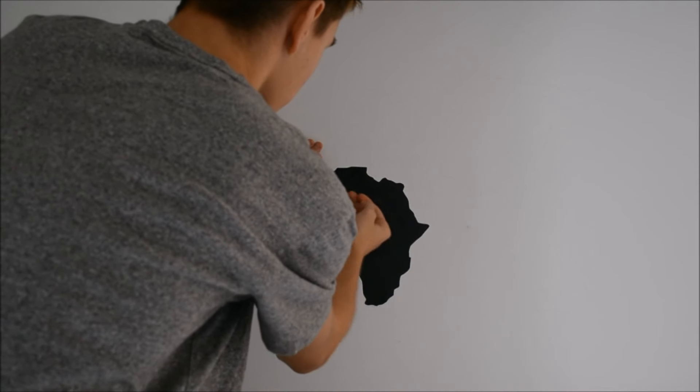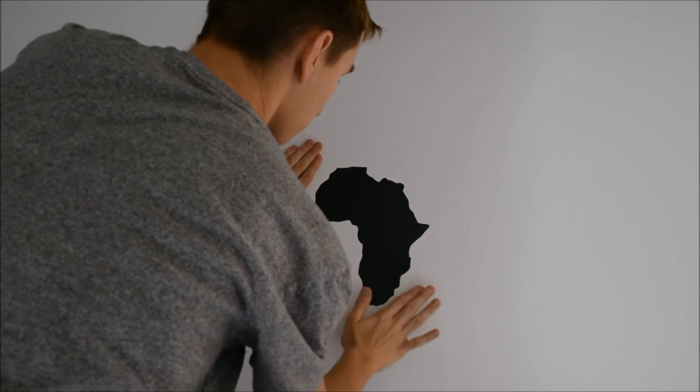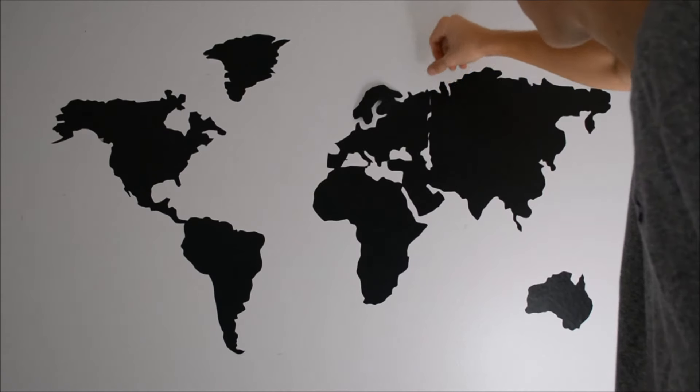To avoid air bubbles, I suggest you smooth out the countries slowly from left to right and don't worry, this won't ruin your wall as it can be easily removed.